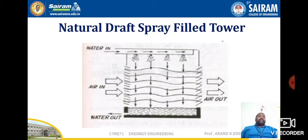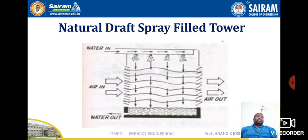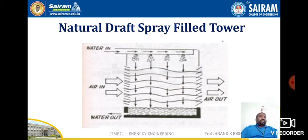In the natural draft spray tower, air enters through the lower side and flows across the unit in a transverse direction. The air circulation depends on wind velocity. The capacity of this tower varies from 50 to 100 liters per minute per square meter of base area depending on air velocity. These towers are used only for diesel plants where prevailing winds are not blocked by obstructions, and they are not used for high capacity thermal power plants as the cooling range is limited.